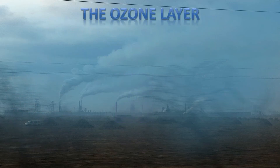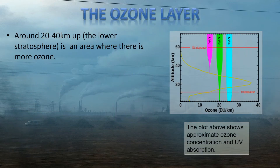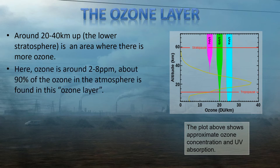Now let's look at the ozone layer itself. We find it around 20 to 40 kilometers up in the lower stratosphere. On the diagram, you can see the yellow line peaking over to the right, where there is most ozone in the atmosphere. Here, ozone is around 2 to 8 parts per million, and around 90% of the ozone in the atmosphere is found in this ozone layer.